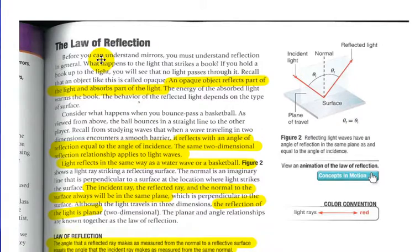Okay, if you look over here, the law of reflection. So those two labs you did, you would have looked at that. So looking at reflection, if you hold a book up to light, you'll see that no light passes through it. Recall that an object like this is called opaque. Opaque meaning that objects reflect part of the light and absorb part of the light. The energy of the absorbed light warms the book. The behavior of the reflected light depends upon the type of surface, of course.